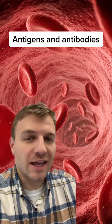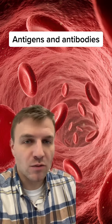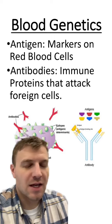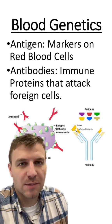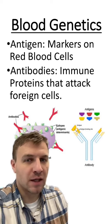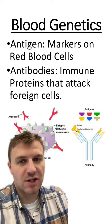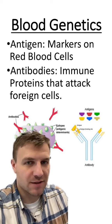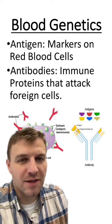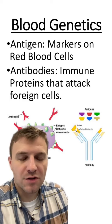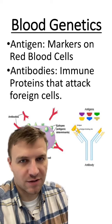Let's talk about something called an antigen found on red blood cells. Before I start talking about the different types of blood, let's learn what an antigen and antibody is. On red blood cells, there are markers called antigens.